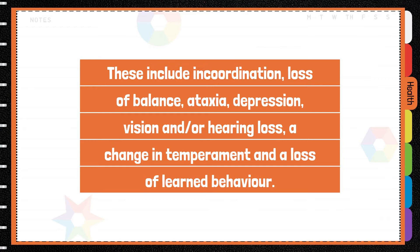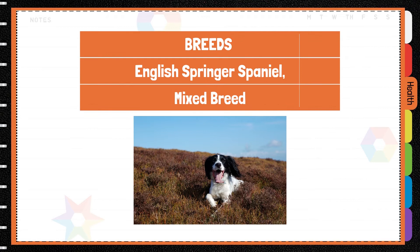The mode of inheritance is autosomal recessive, and the breed affected is the English Springer Spaniel and any mixed breeds containing this.